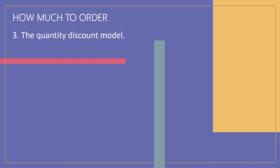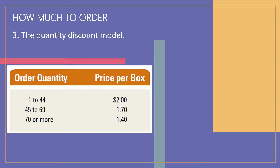Quantity discounts are price reductions for larger orders offered to customers to induce them to buy in large quantities. For example, a surgical supply company publishes a price list for boxes of gauze strips where the price per box decreases as order quantity increases. If quantity discounts are offered, the buyer must weigh the potential benefits of reduced purchase price and fewer orders against the increase in carrying costs caused by higher average inventories.